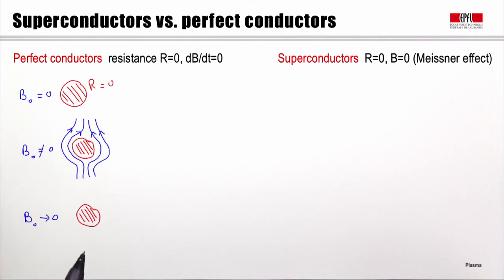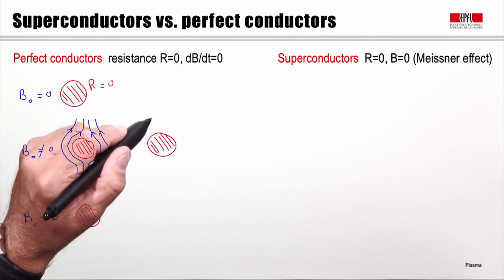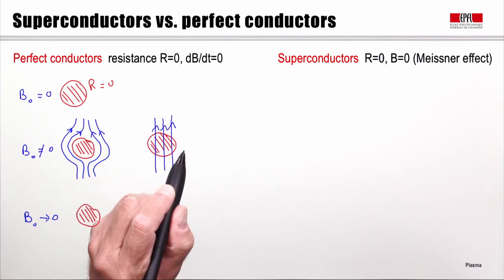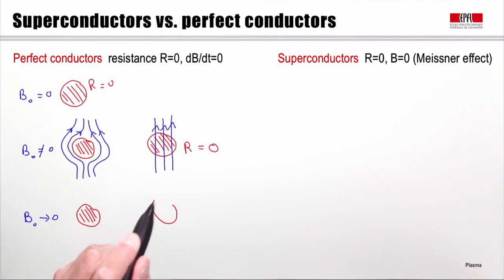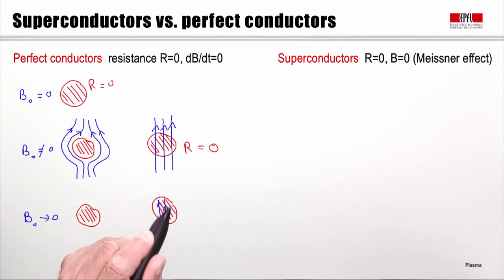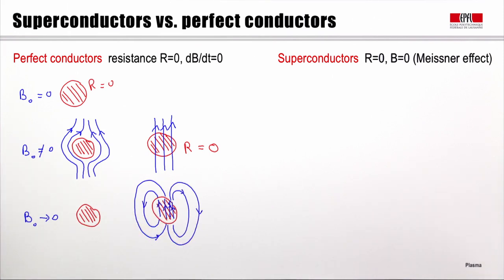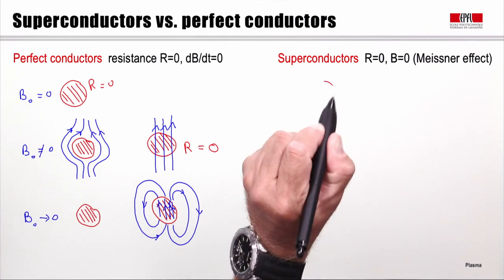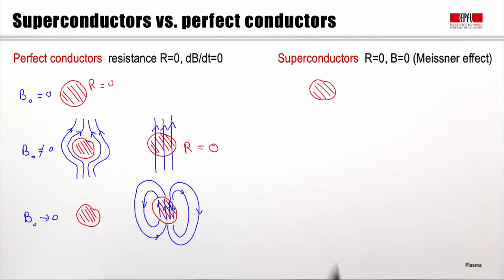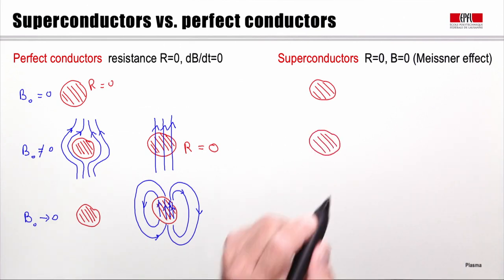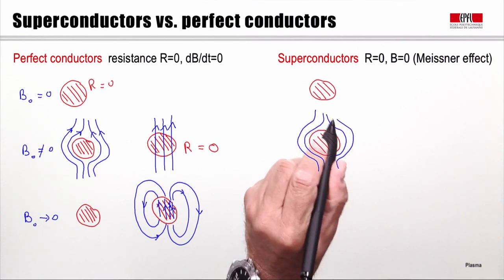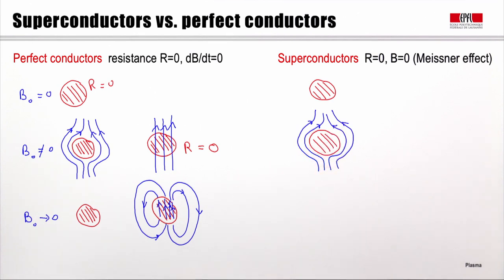Now if we start from a situation in which the sample is immersed in a field and its resistance is made zero, and then we remove the field — what happens is that the field tries to stay the same inside the sample to preserve the flux. So if we make a sample a perfect conductor in the presence of an externally applied magnetic field, it will try to keep its own field inside.